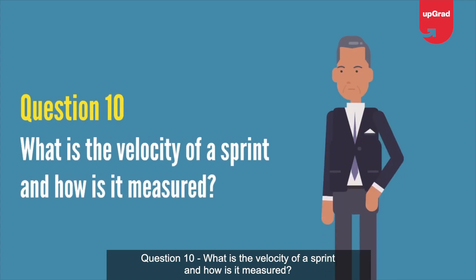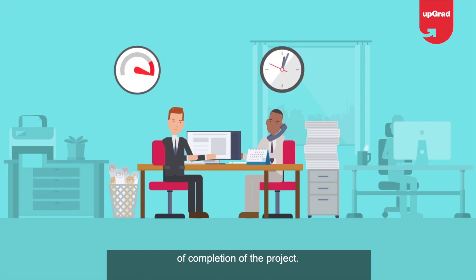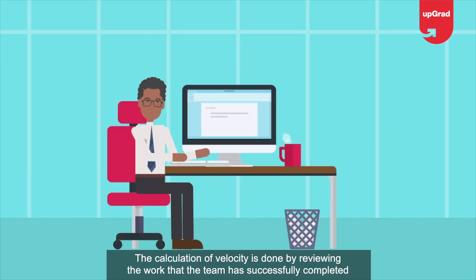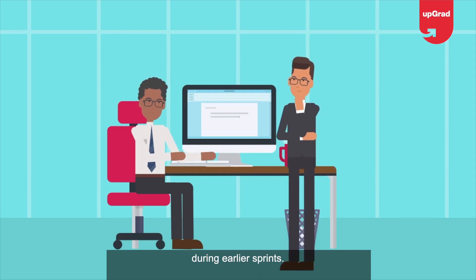Question 10: What is the velocity of a sprint and how is it measured? Velocity is one of the planning tools used to estimate the speed of work and the time of completion of the project. The calculation of velocity is done by reviewing the work that the team has successfully completed during earlier sprints.